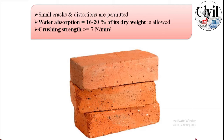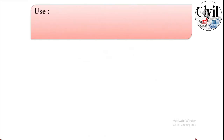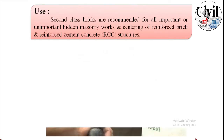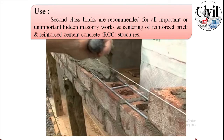Second class bricks are recommended for all important or unimportant hidden masonry structures, such as reinforced brick and reinforced cement concrete structures. They are normally used in houses and buildings where good quality is required.